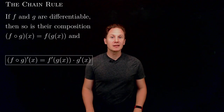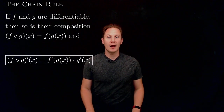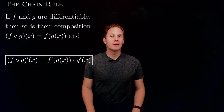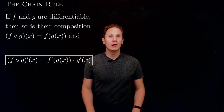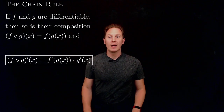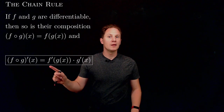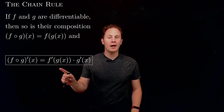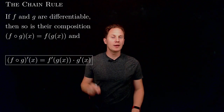The chain rule helps us compute the derivative of the composition of two or more functions. It says that if we have two functions f and g that are differentiable — more precisely, g is differentiable at x and f is differentiable at g of x — then the composition of f and g is also differentiable at x. You can find that derivative by evaluating the derivative of f at g of x and multiplying that by the derivative of g evaluated at x.